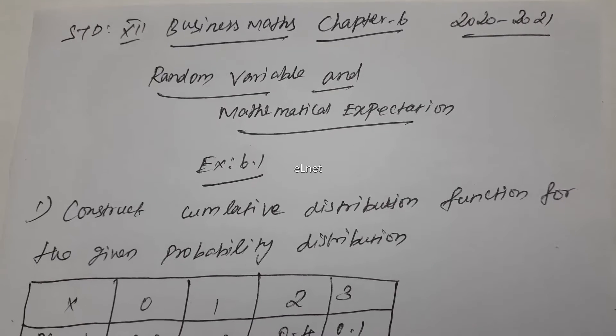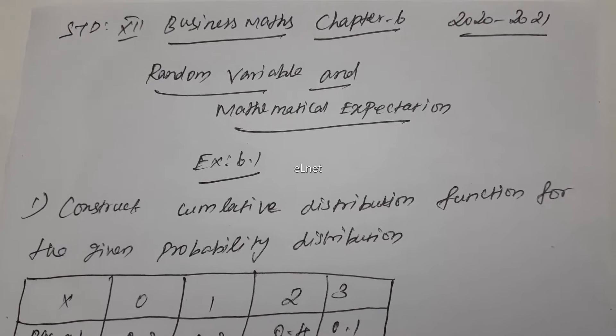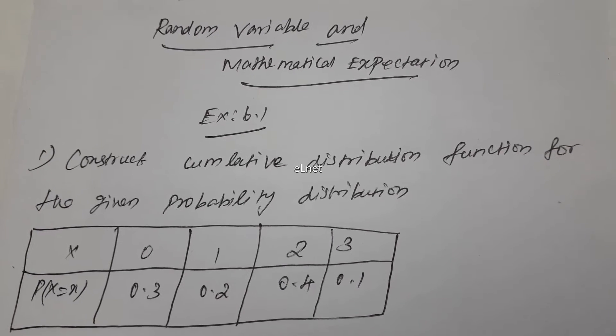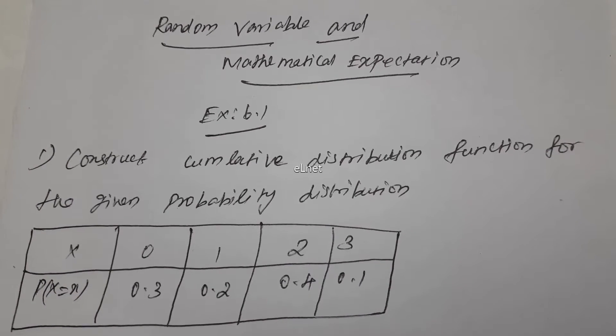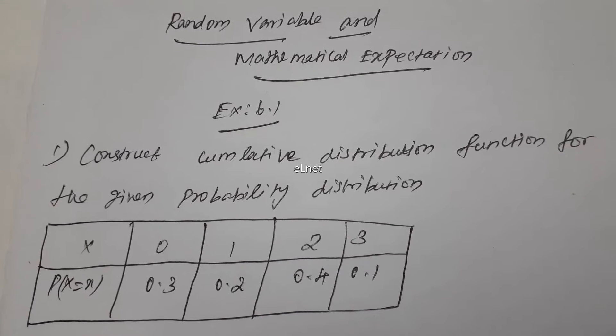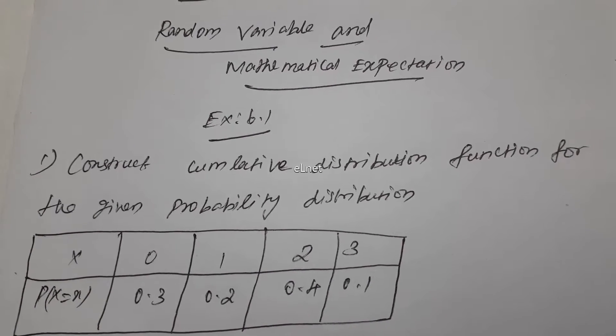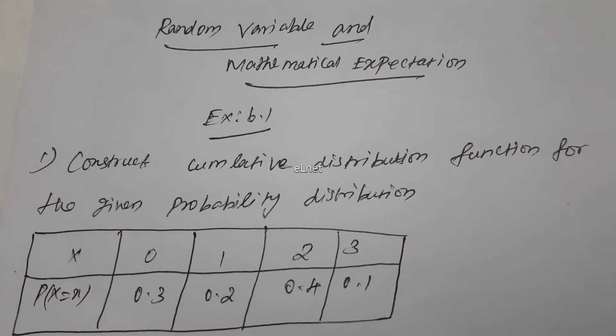We need to find E(x) value, mean, and variance. The formulas are very easy. First, for probability distribution, the total probability value is 1.